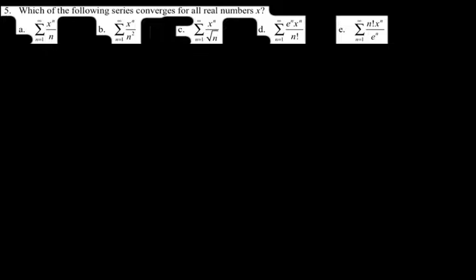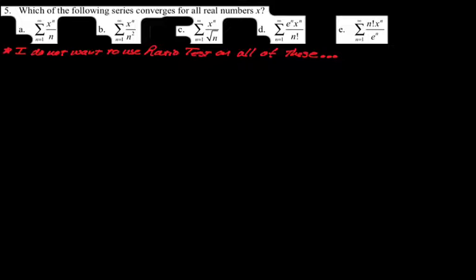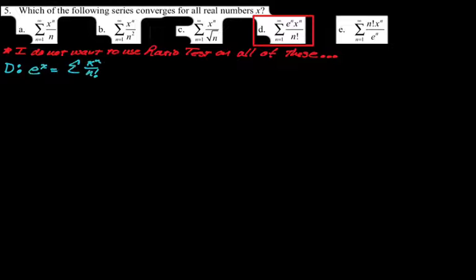Number five: which of the following series converges for all real numbers x? I don't want to do the ratio test on all of these. The one that sticks out most is D, which has n factorial in the denominator. I know that e to the x has n factorial in the denominator and converges for all reals. Looking at D, it appears to just be e to the x with x replaced by ex — so D is the series for e^(ex), which converges for all reals.